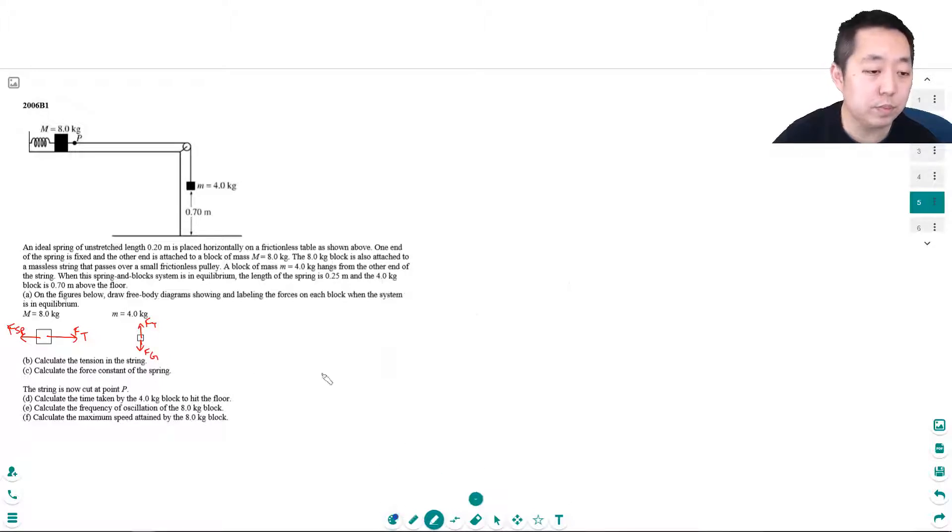Calculate the tension in the string. Well whenever I do free body diagrams, the next step is to do the net force equations. Because everything is in equilibrium, the net forces are equal, so I have the spring force should equal—well actually, fg has to equal the force of tension.